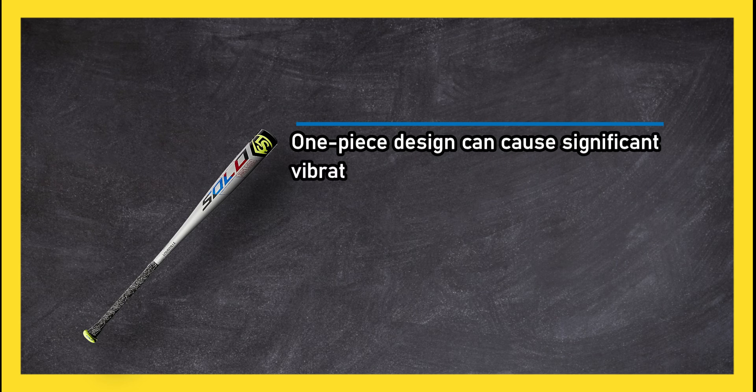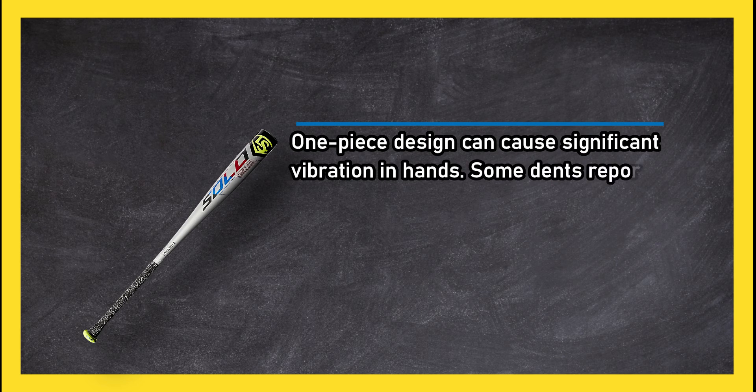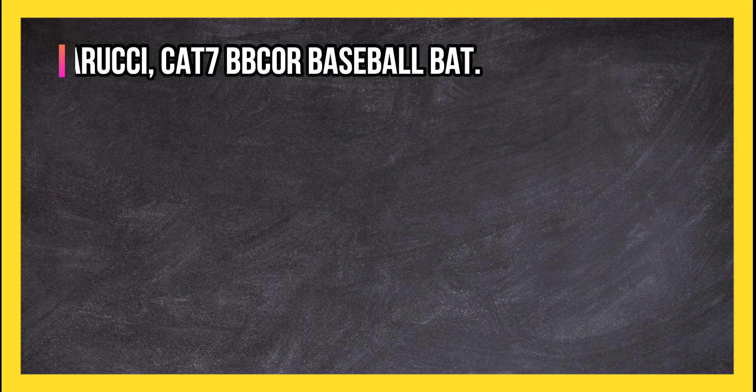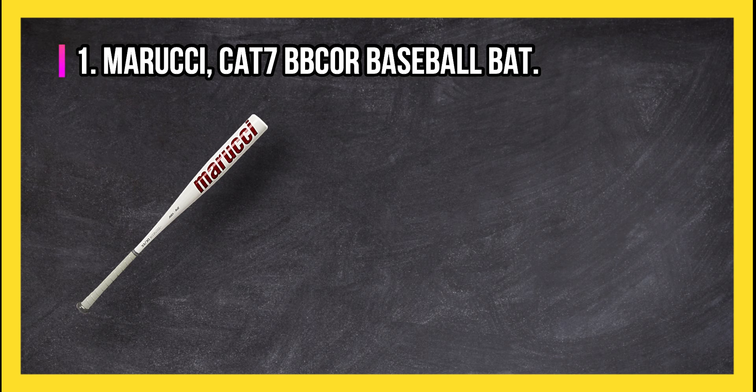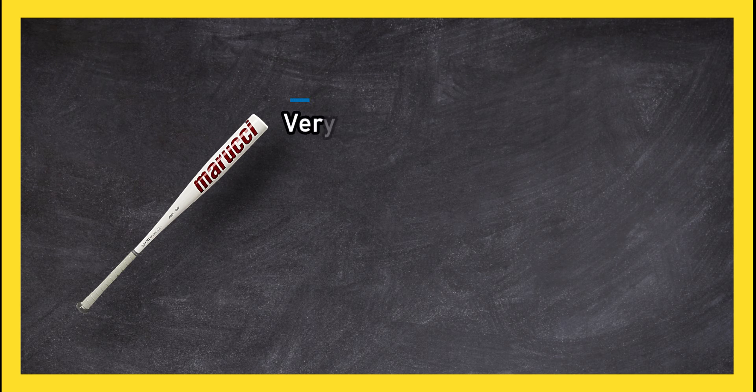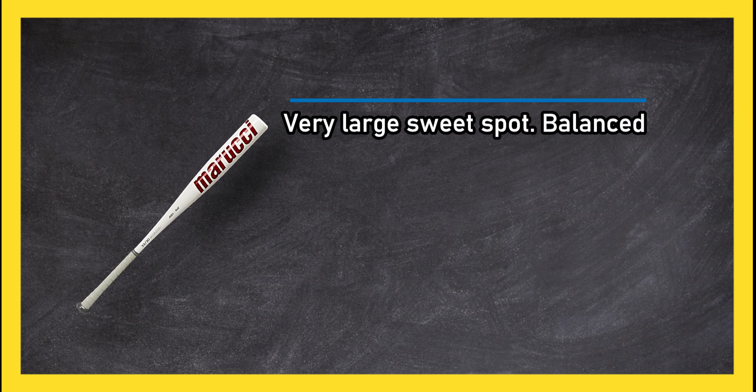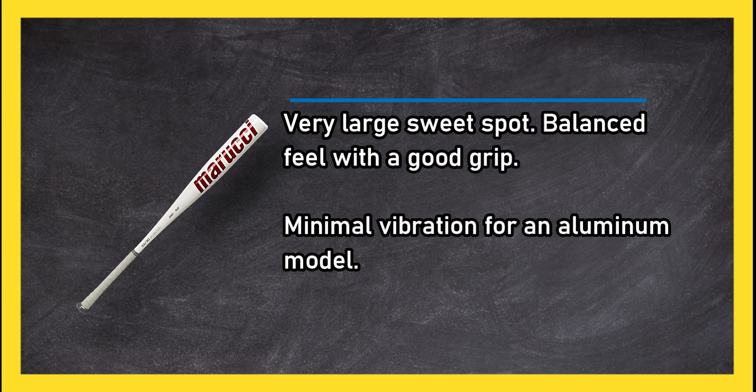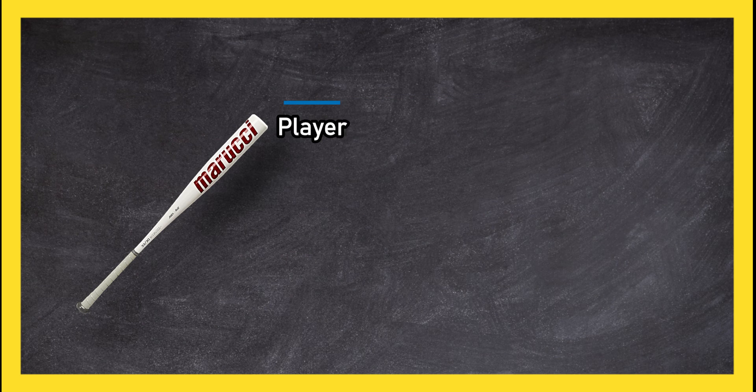At number one: Marucci Cat 7 BB Core baseball bat. Very large sweet spot, balanced feel with a good grip, minimal vibration for an aluminum model.